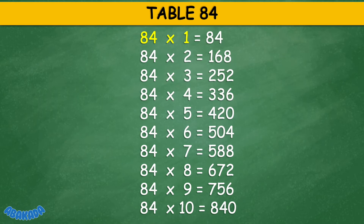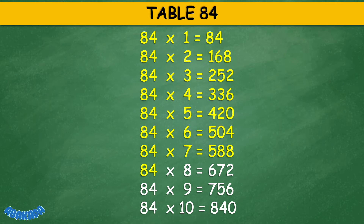Table 84: 84 times 1 equals 84, 84 times 2 equals 168, 84 times 3 equals 252, 84 times 4 equals 336, 84 times 5 equals 420, 84 times 6 equals 504, 84 times 7 equals 588, 84 times 8 equals 672, 84 times 9 equals 756, 84 times 10 equals 840.